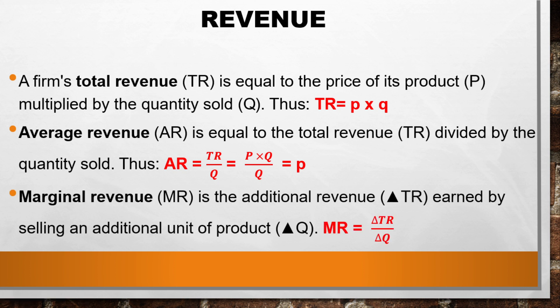Then we have marginal revenue. Marginal revenue is the additional revenue earned by selling an additional unit of product. The formula for marginal revenue is MR equals the change in total revenue divided by the change in quantity. Now that you understand the definitions and formulas for revenue, we can go back to our table and try to complete it.